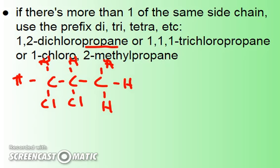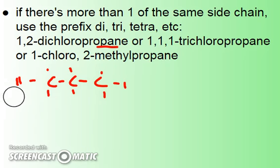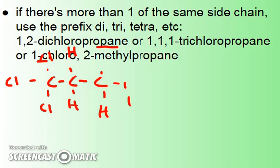If I had 1,1,1-trichloropropane, that's going to look a little different. I've got three carbons making up the propane, but this time I have three chlorines all on the first atom — and of course the first atom could be the other end as well. Then I fill in the hydrogens in all the other available spots. That is 1,1,1-trichloropropane.